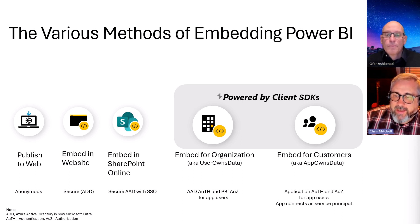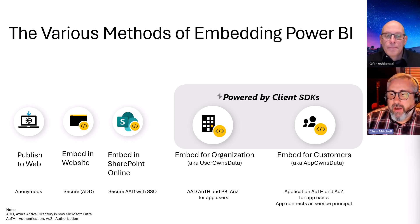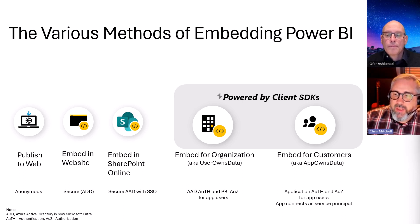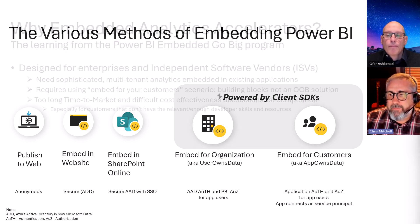You use a service principal to connect on behalf of your application users to Power BI, and then your application backend distributes content access control based on your particular app's needs. We work with ISVs a lot, and they're very frequently using the app-owns data scenario. But one of the things we've noticed in our collaboration over the years on the Power BI Embedded Go Big program is that these ISVs a lot of times struggle in implementation simply because there are so many options.